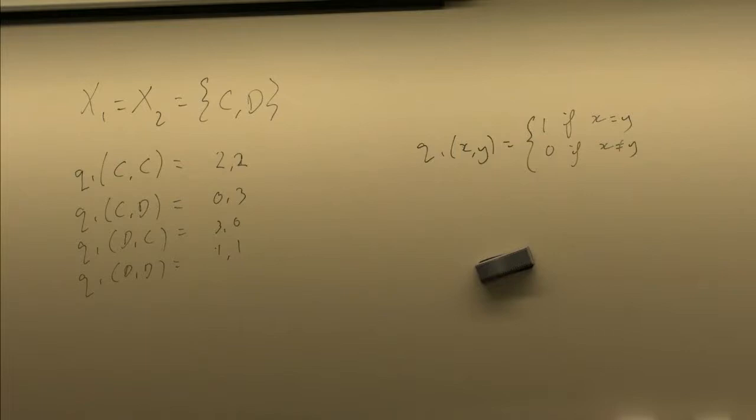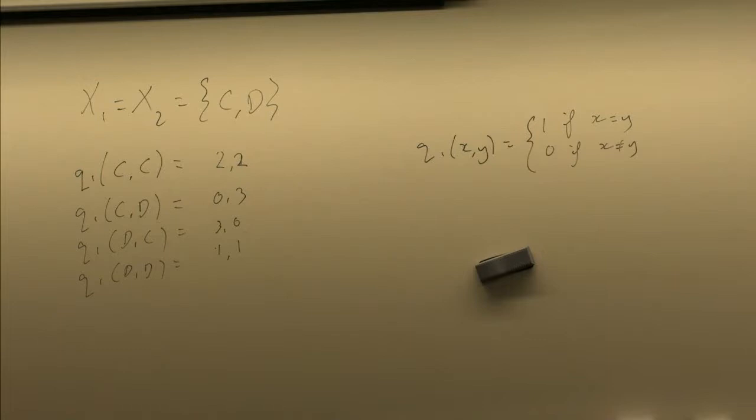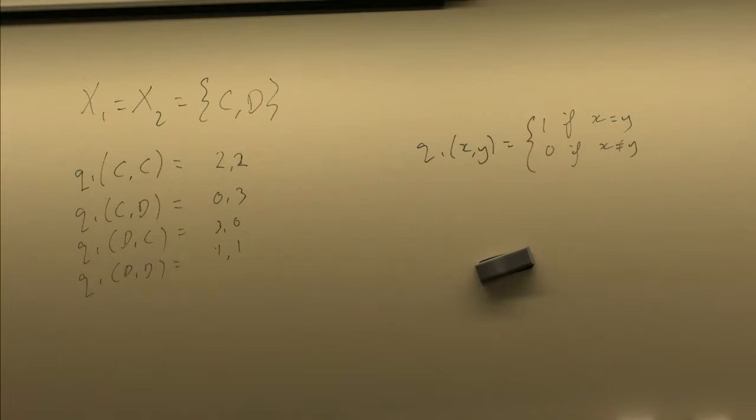What it does have is a probabilistic Nash equilibrium, which is what Nash won the Nobel Prize for. I think what happened is he was the first person to write it down clearly, and his theorem made it interesting for the first time.